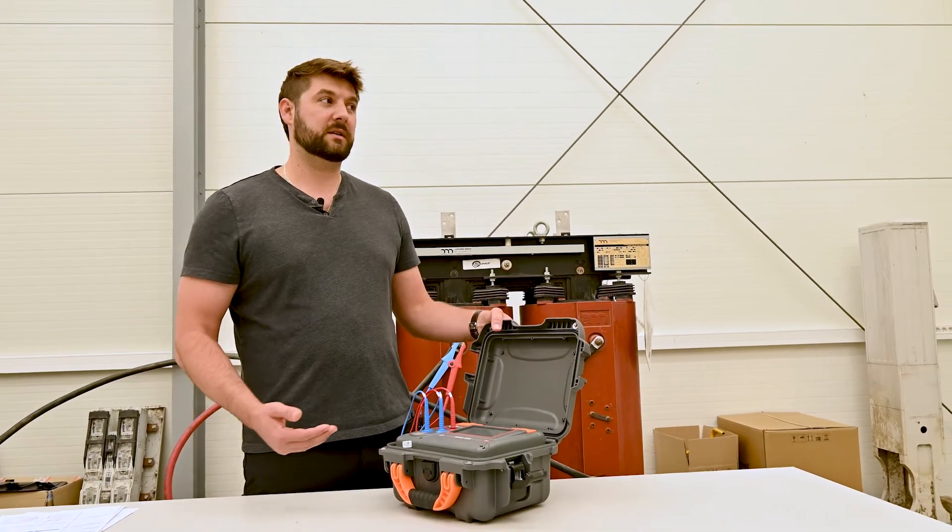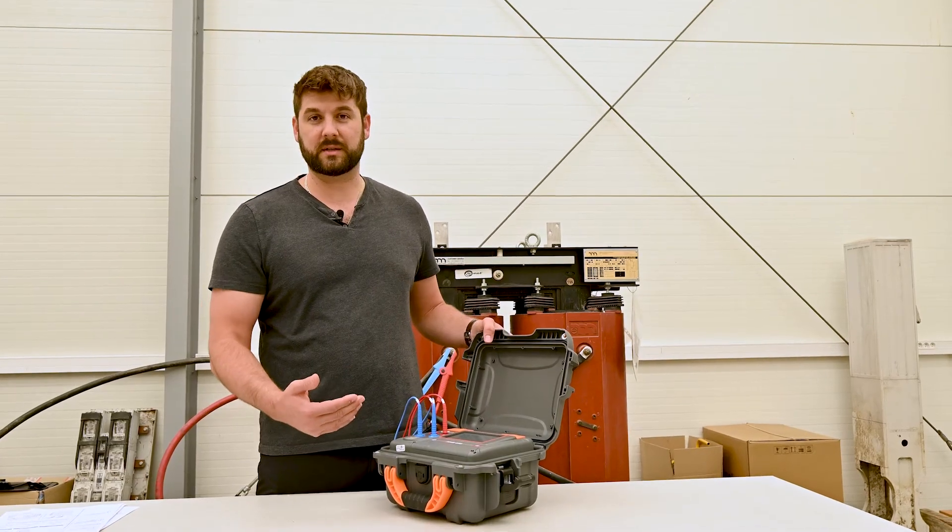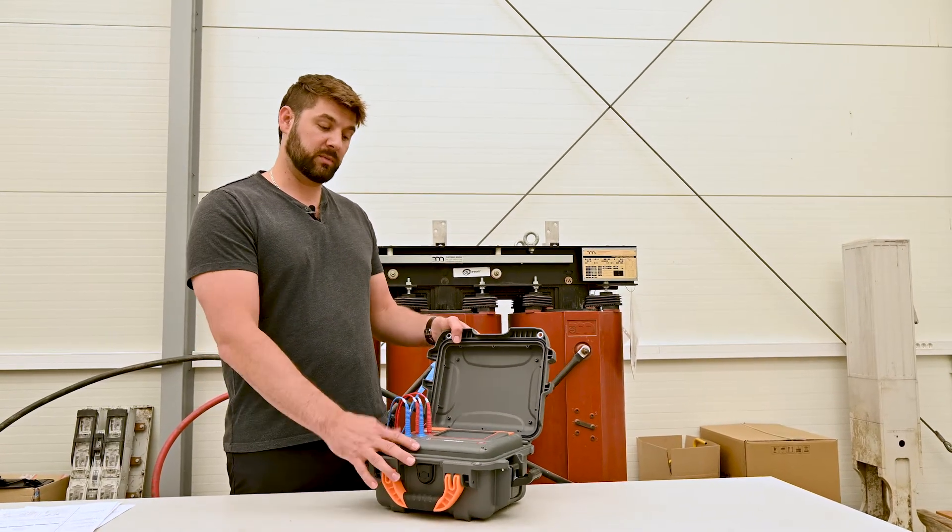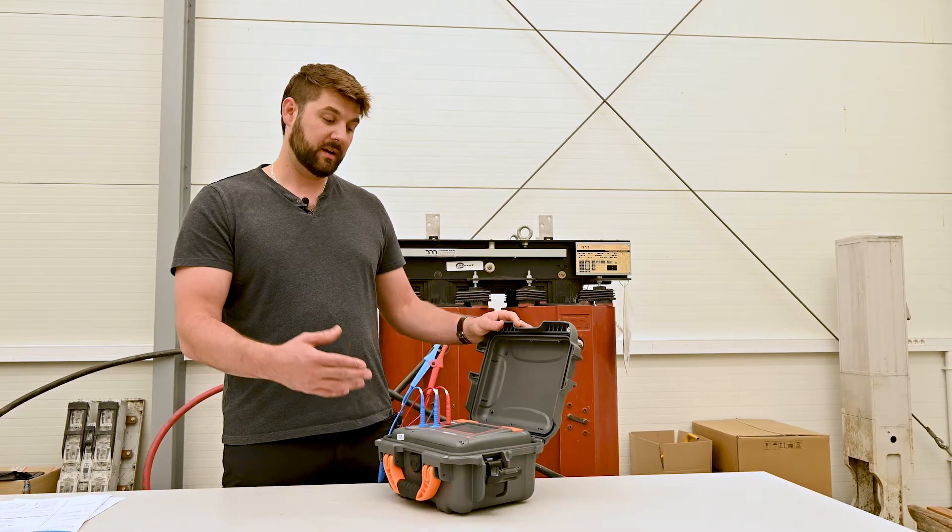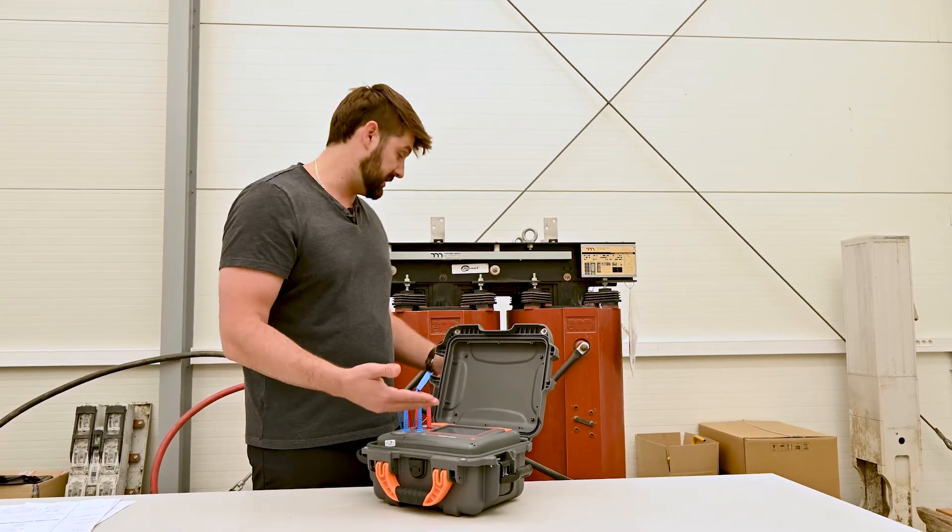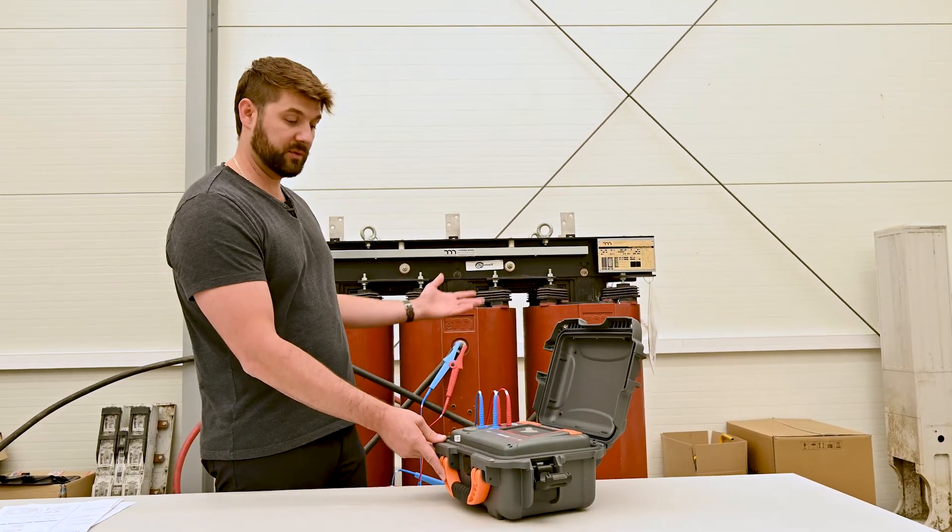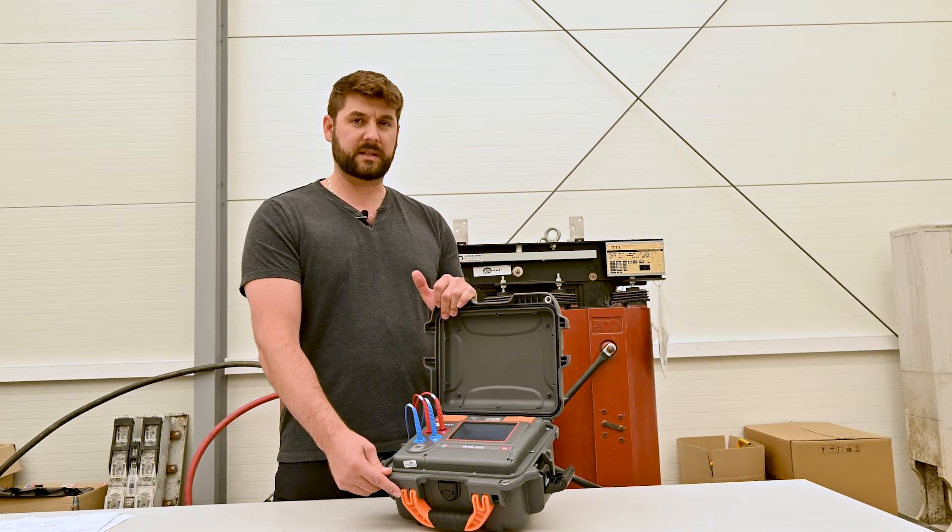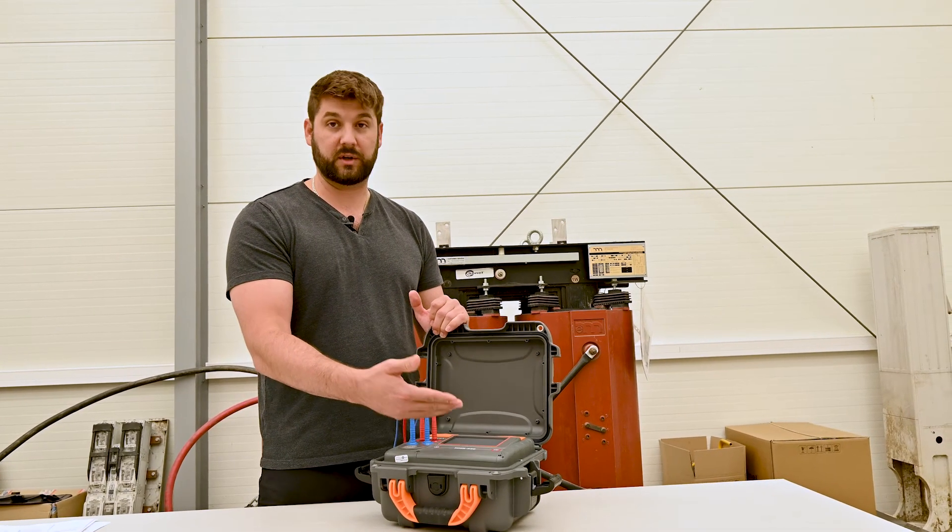If you're testing inductive objects, it does take more time because you have to overcome the inductance to get a stable current. But this instrument will also allow you to demagnetize the core of the winding after you finish. As you can see, I just demagnetized this transformer across the B phase after we were done testing it. It takes a few minutes, but now it says core demagnetization process finished.